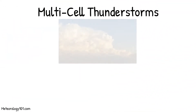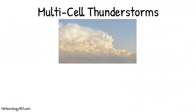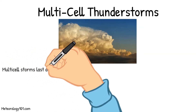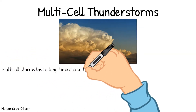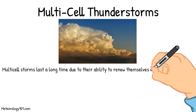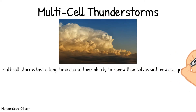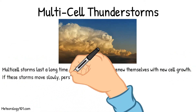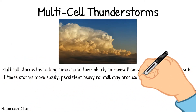Multi-cell thunderstorms last a long time due to their ability to renew themselves with new cell growth. If these storms move slowly, persistent heavy rainfall may produce flash flooding.